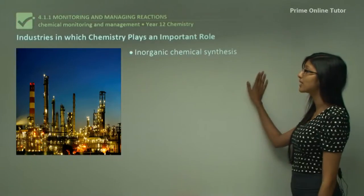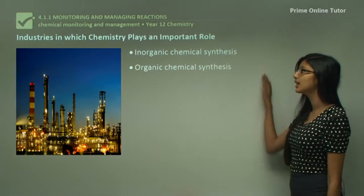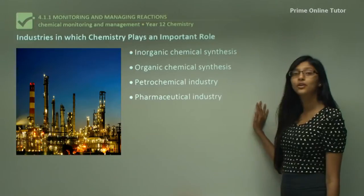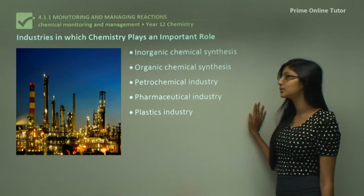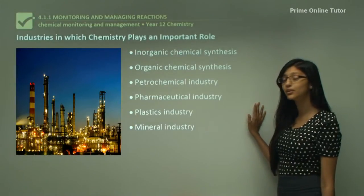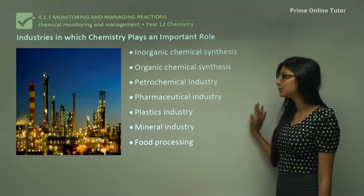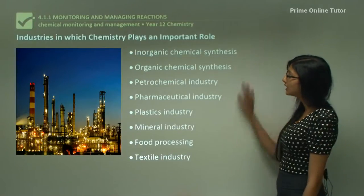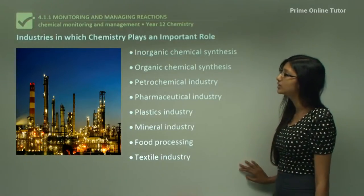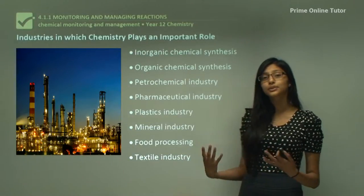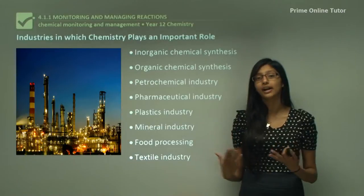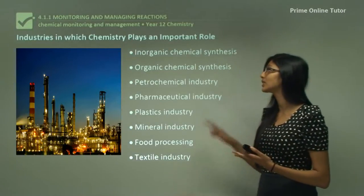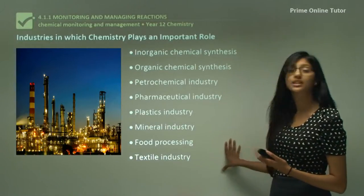Now let's look at the different kinds of industries in which chemistry plays a very important role. We have inorganic chemical synthesis, organic chemical synthesis, petrochemical, pharmaceutical, plastics, mineral, food processing, and textile industry. All these industries use chemistry and they provide us with very different products. Now let's look at each of these industries in depth.